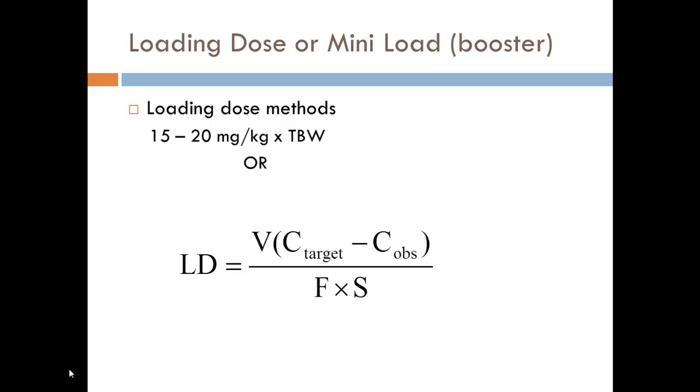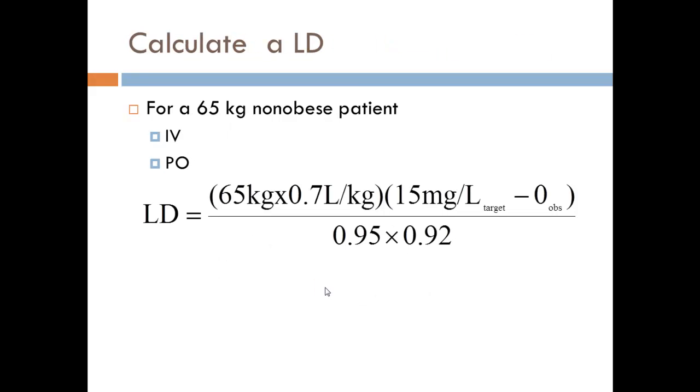Giving a loading dose or mini-load booster is the same as any other drug. We start with a volume of distribution, which is 0.65 to 0.7 liters per kilogram, and multiply that times our target and subtract any drug that's already on board. Then you would have to worry about bioavailability and salt form, depending on if you're giving an IV.